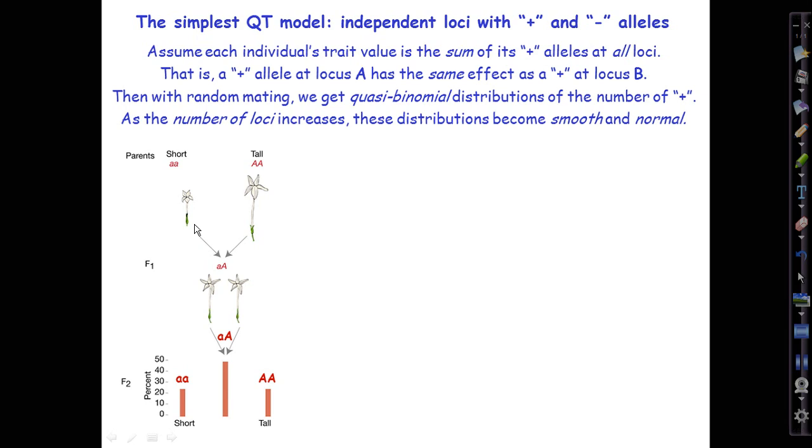Let's imagine that the short-flowered line is short because it's homozygous for the little a allele at the flower height locus, and the tall ones are homozygous for the big A tall-making allele at the same locus. East crossed the two lines to make F1 hybrids. They would then have had one short parent, one tall parent, and so they would have been heterozygous.